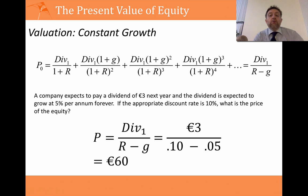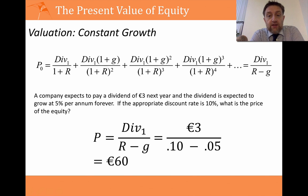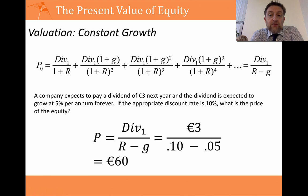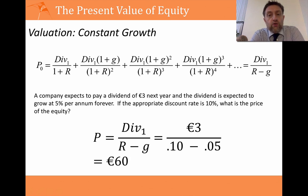Now the same thing but with a growth rate — the dividend growth model. You have a dividend of €3 next year, but this time the dividend grows at 5% per annum forever. The discount rate is still 10%. So the price equals D1 divided by (R minus G): €3 divided by (0.1 minus 0.05), giving a price of €60. The price is double because of the growth rate. We'll come back to growth opportunities and how to value them in a future video.